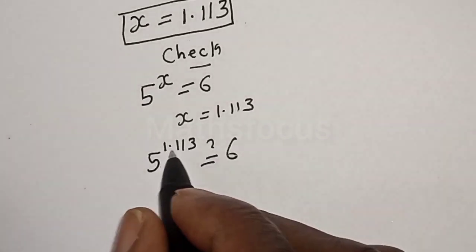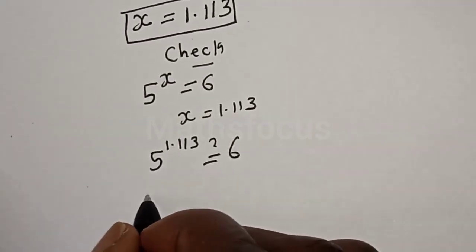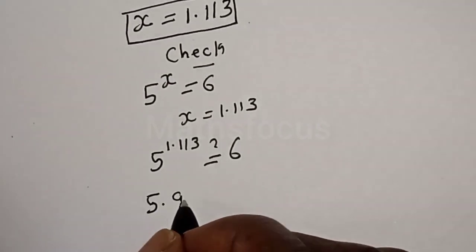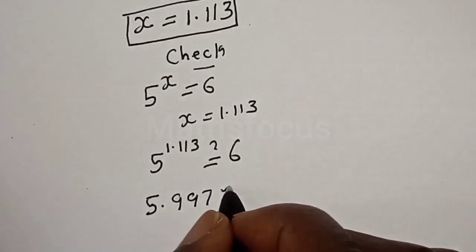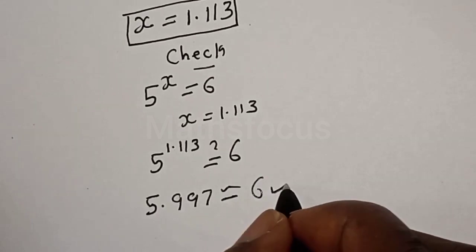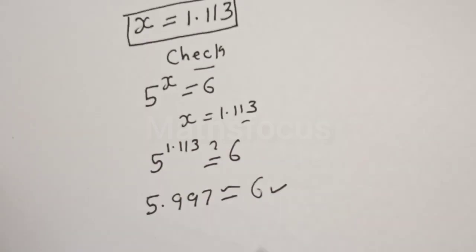And 5 raised to power 1.113 is equal to 5.997, which is approximately equal to 6. We satisfy the given equation at s is equal to 1.113.